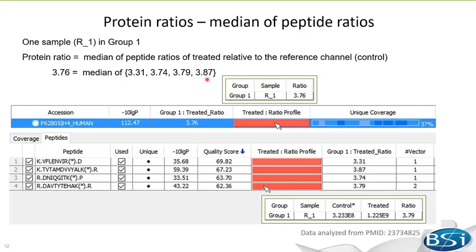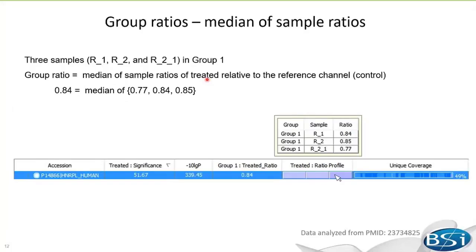When you have multiple samples in one group — for example, R1, R2, and R3 in group one — the protein ratio in group one is calculated from the median of the SILAC ratios across these three replicates, and then shown in the group one protein ratio column.